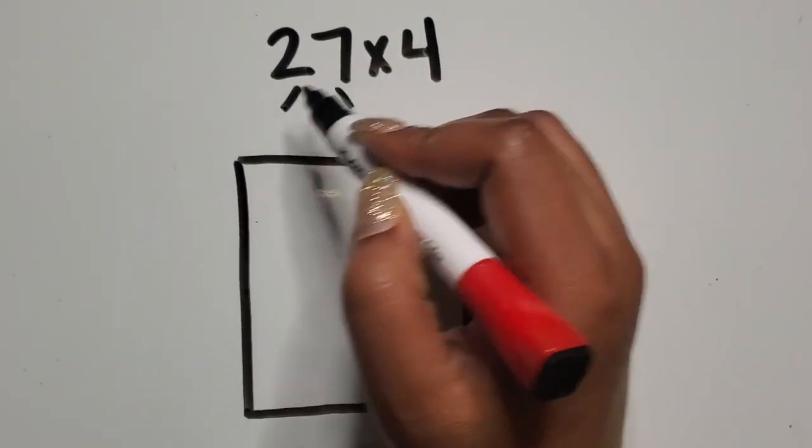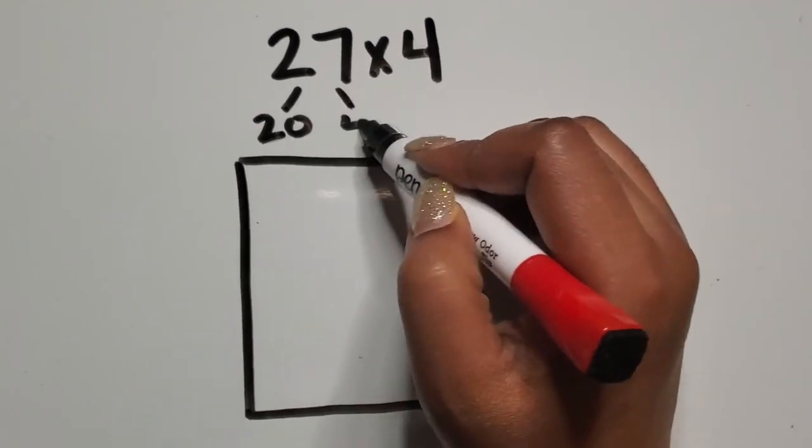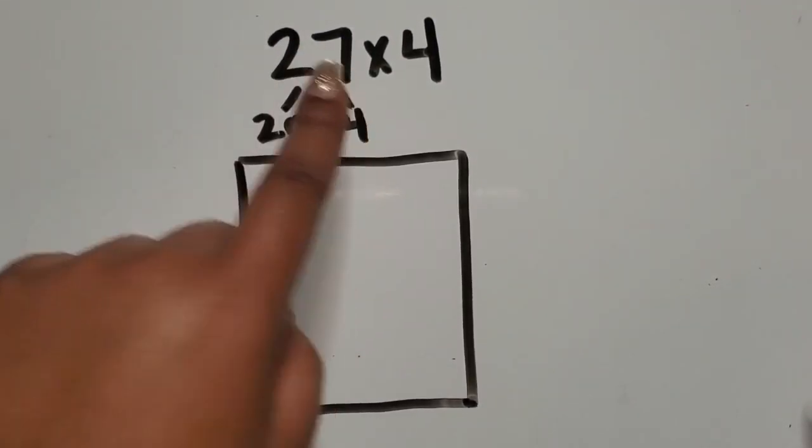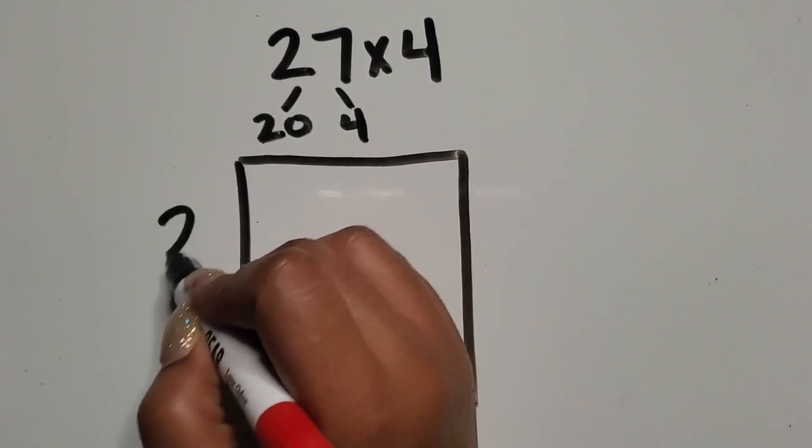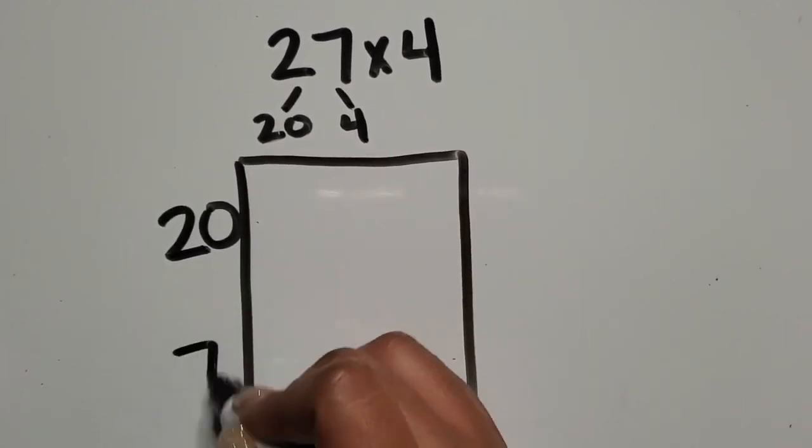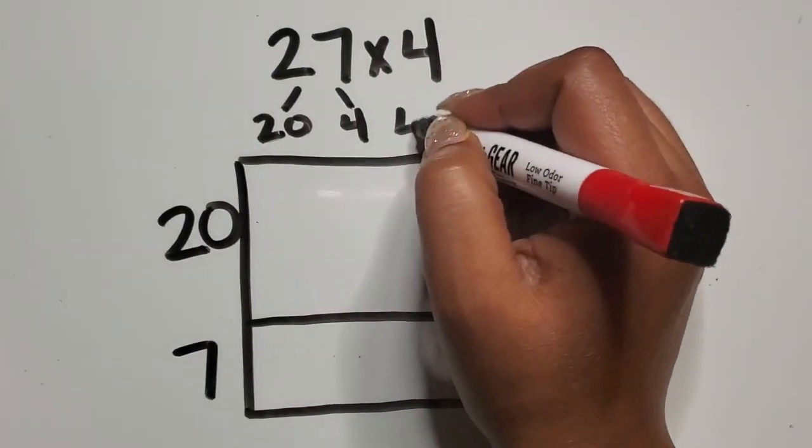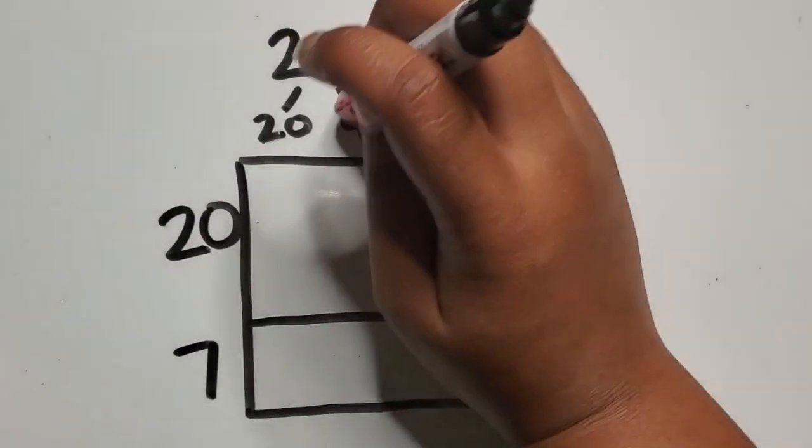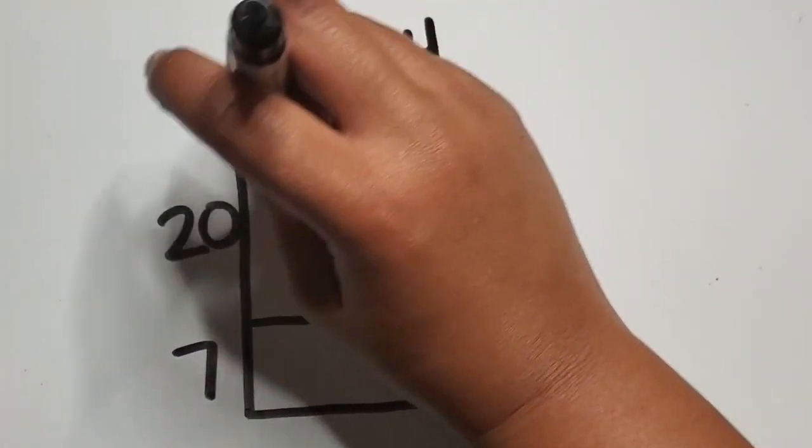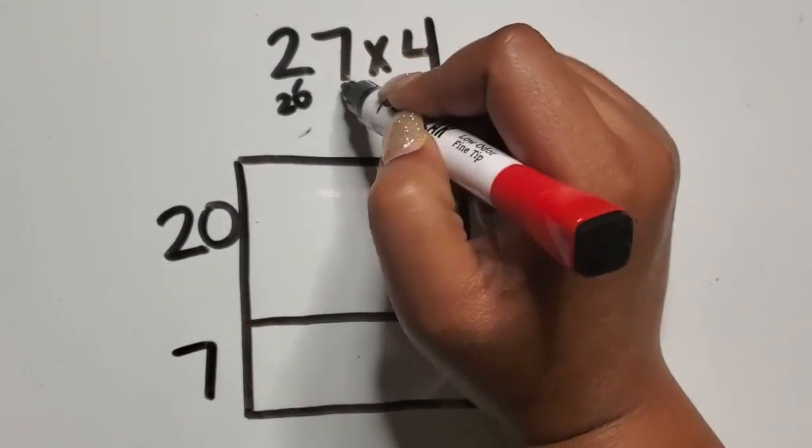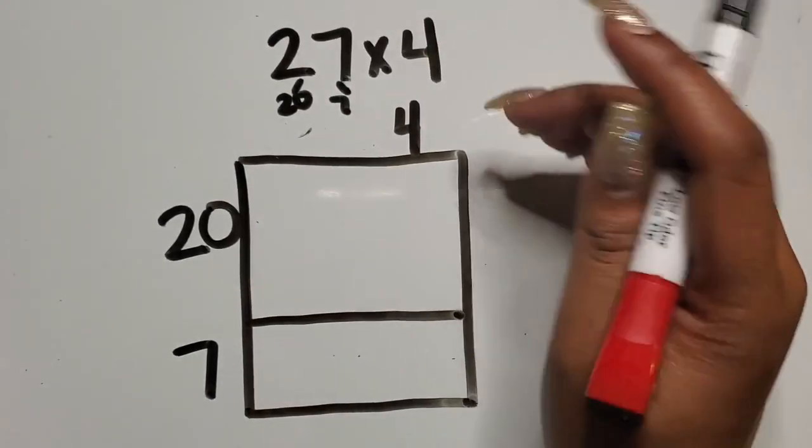So I want to decompose 27 by place value. Again, you can decompose the numbers in different ways, but an easier way to show students or to start off is just based on the number of tens and the number of ones. So we have 20 here and seven here. And then we're going to have the four rows here. So we have the 20 and the seven.